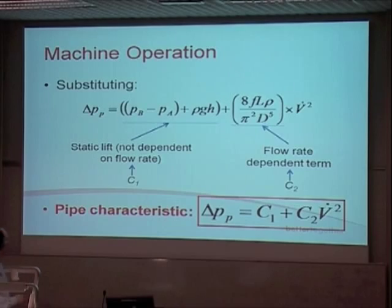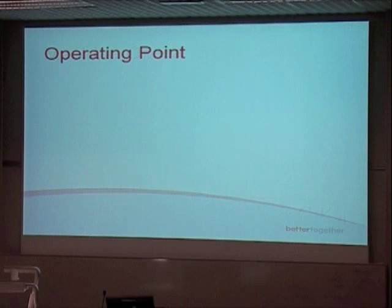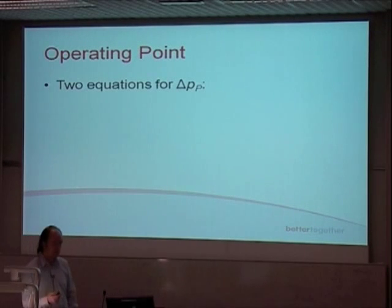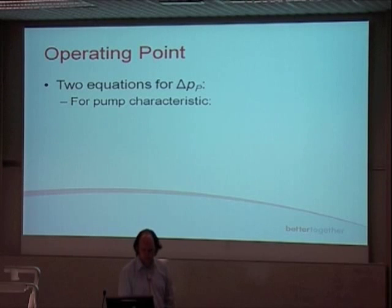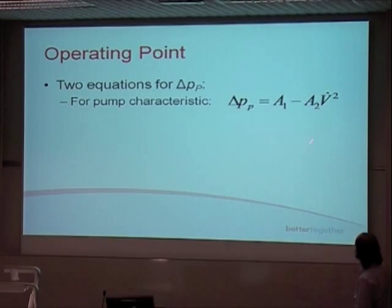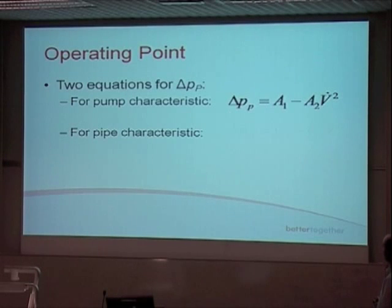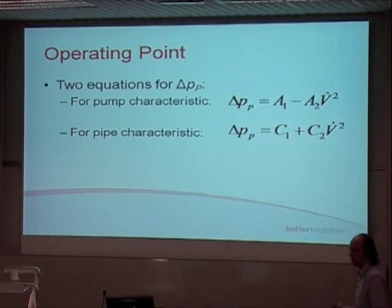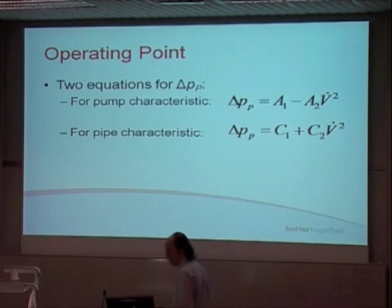This is called the pipe characteristic. We covered the pump characteristic — this is the pipe characteristic. The operating point comes from having two equations for ΔPP. For the pump characteristic that equation is A1 minus A2·V̇², and for the pipe characteristic it is C1 plus C2·V̇². Matching those two equations both equal to ΔPP gives us the operating point.